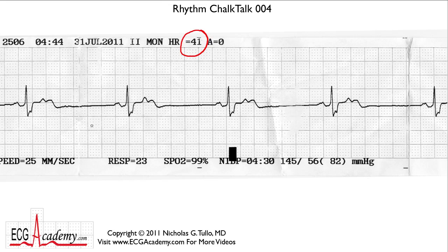You look at the tracing and the QRS complexes certainly seem to be regular. If you measure the rate starting at this heavy line and count off 300, 150, 75, 60, 50 — it is about 40 beats per minute or so. That's pretty accurate.